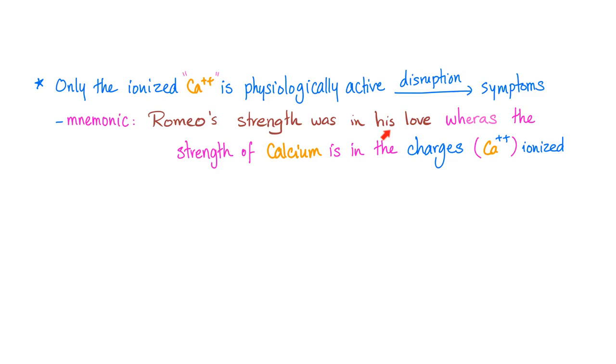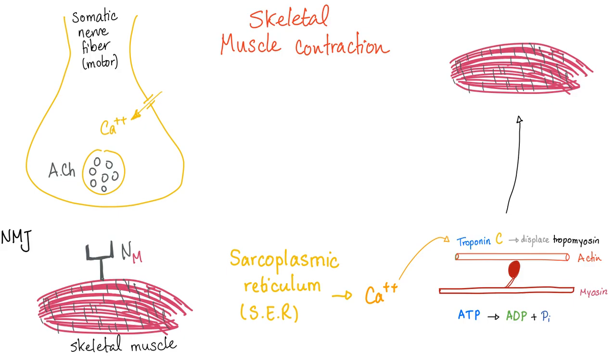Romeo's strength was in his love. Whereas the strength of calcium is in the charges. Functions of calcium. Number one, skeletal muscle contraction. Please watch my videos on anti-acetylcholine receptor antibodies because we have talked about this before.